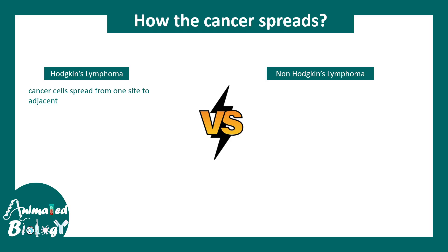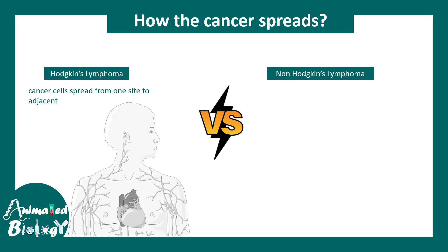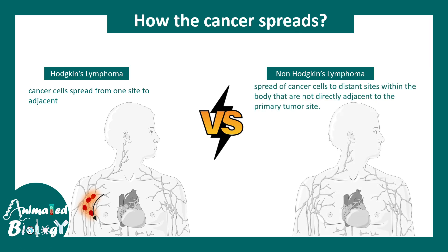The question is how does this cancer spread? The spread for Hodgkin's lymphoma is very predictable — if one lymph node is affected, the next adjacent one would be affected after that, and so on. This is known as contiguous spread. Whereas non-Hodgkin's lymphoma spreads in an unpredictable, non-contiguous fashion — the cancer can spread to distant sites within the body without necessarily spreading to the adjacent site of the primary tumor.